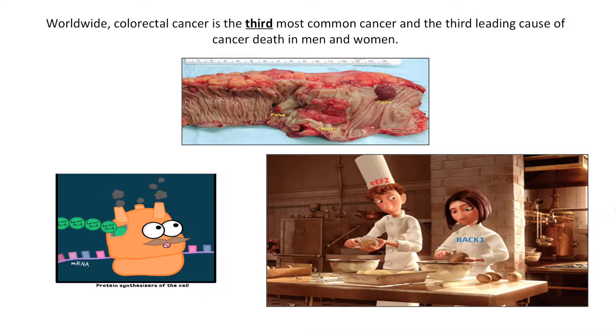In all the cells of your body there is a fundamental process called protein production, and this process is very highly regulated — because accumulation of wrong proteins will lead a normal cell to transform into a cancer cell. For this reason, there are factors in the cells — our chefs for today — that are able to tightly control this process, as every chef will check every single ingredient going into your plate. I'm particularly focused on two: elongation factor 2 and RAC1.